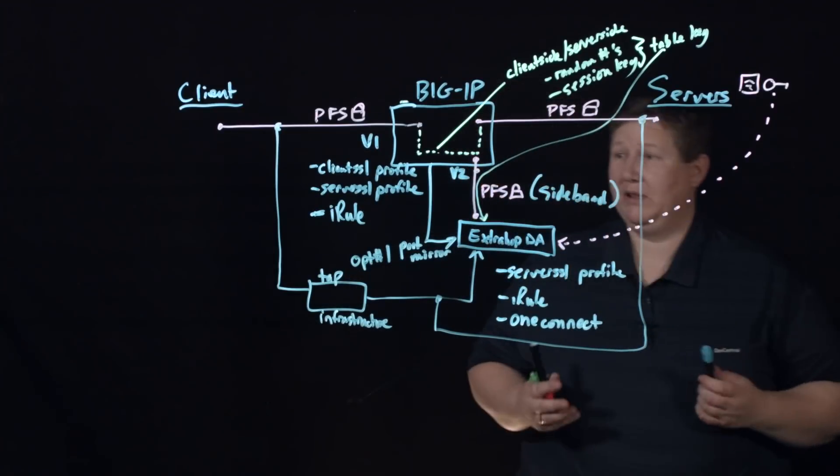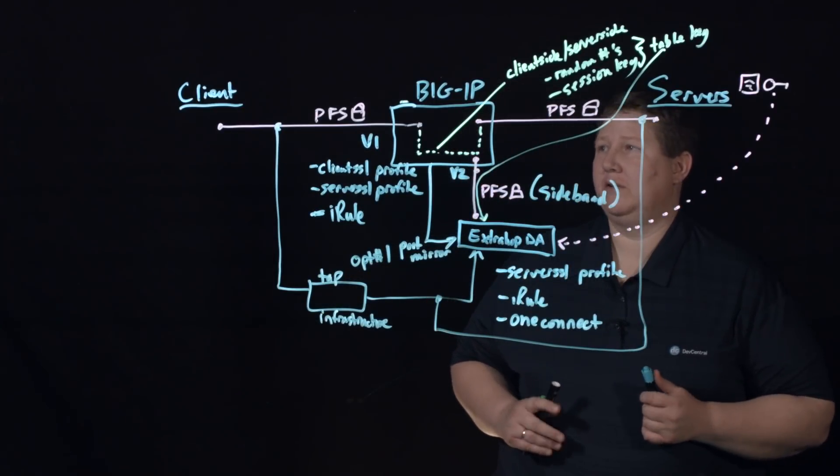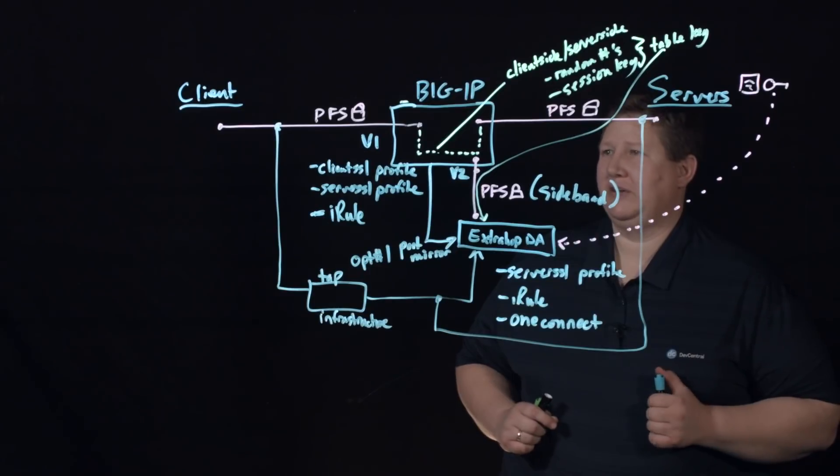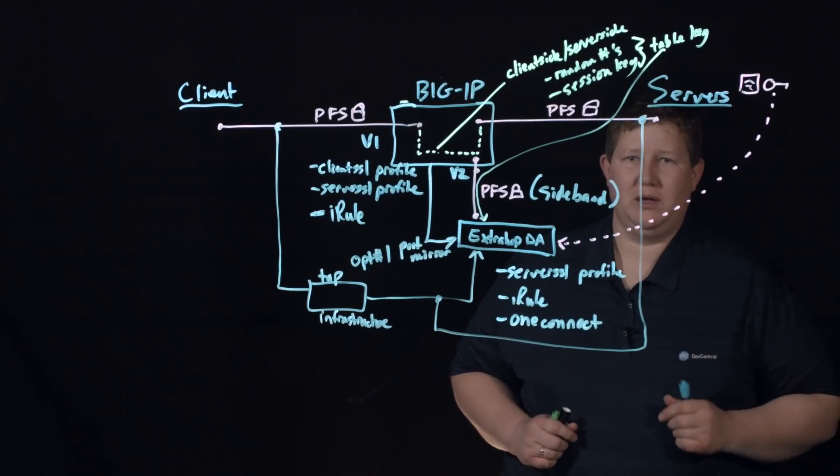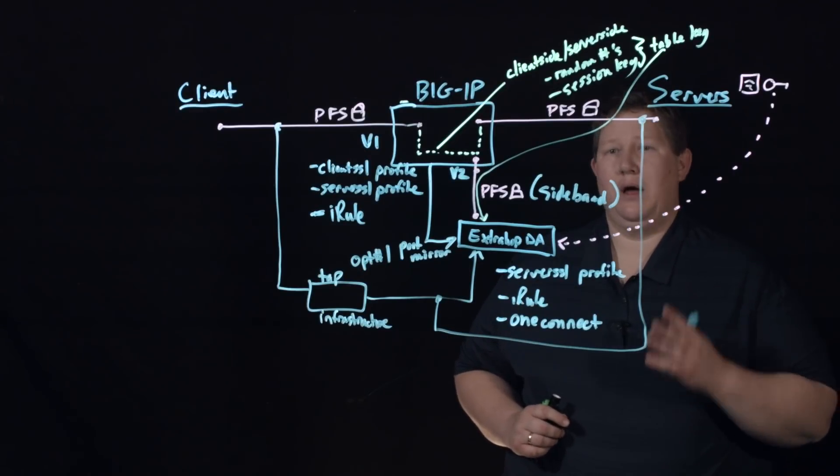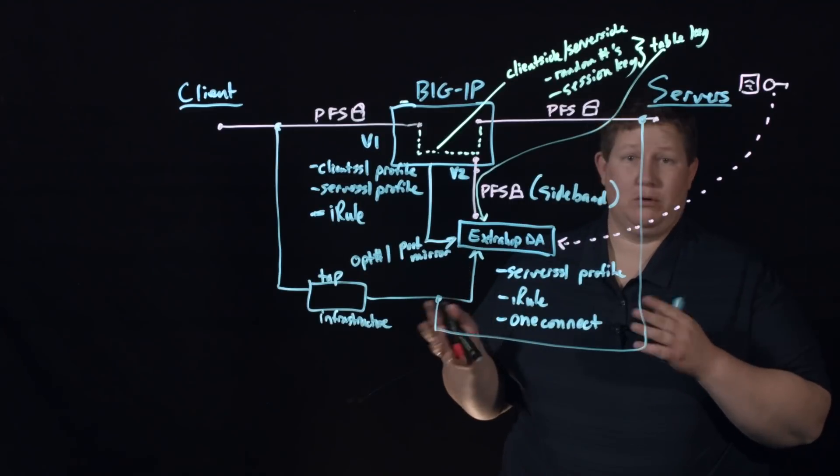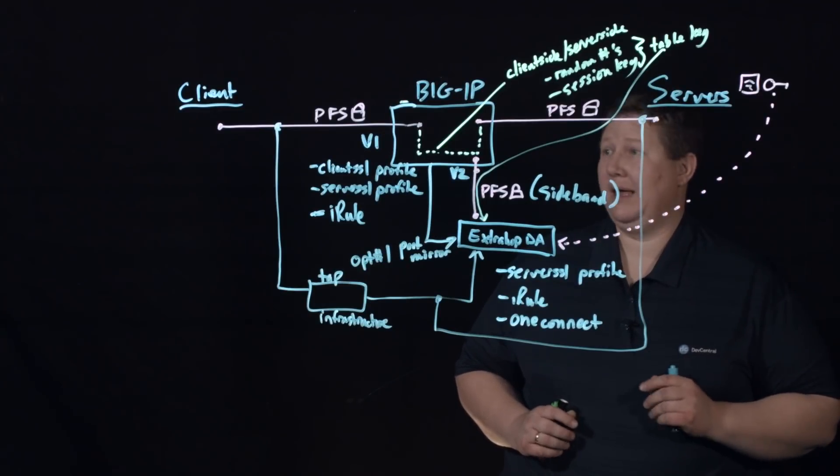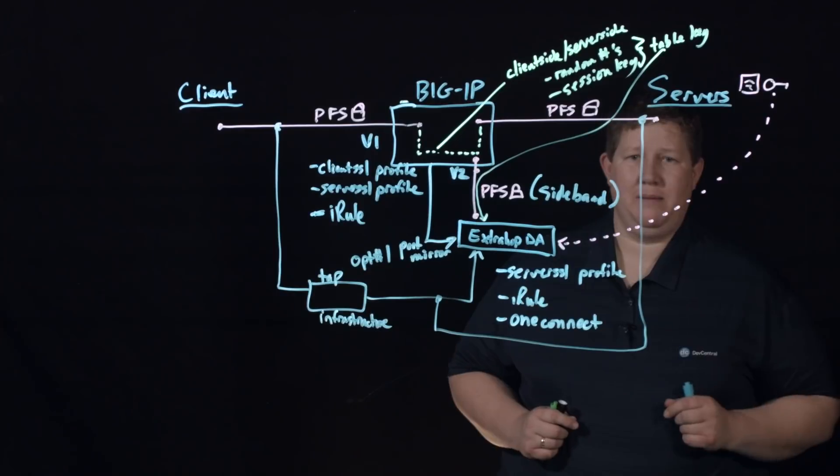So again, this is a really slick solution. It's a couple of iRules and a couple of virtual servers and you're good to go. A realization of David Holmes' ultimate passive inspection infrastructure. So I wanted to share it with the community. Again, thanks to Colin Walker and ExtraHop for building such a cool solution for customers who have the local traffic manager and the ExtraHop Discovery appliance. So we'll see you out there community. And if you enjoyed this video, click subscribe. Thanks.